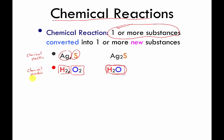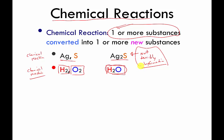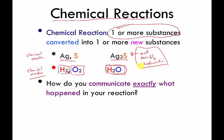If you needed to describe chemical reactions to people, you could write the symbol for each element you started with and ended up with, and convey that information. But this is not terribly informative. A lot of times if you're describing reactions to other chemists, they want to know more detail — how did the chemical reaction actually take place, what actually happened?